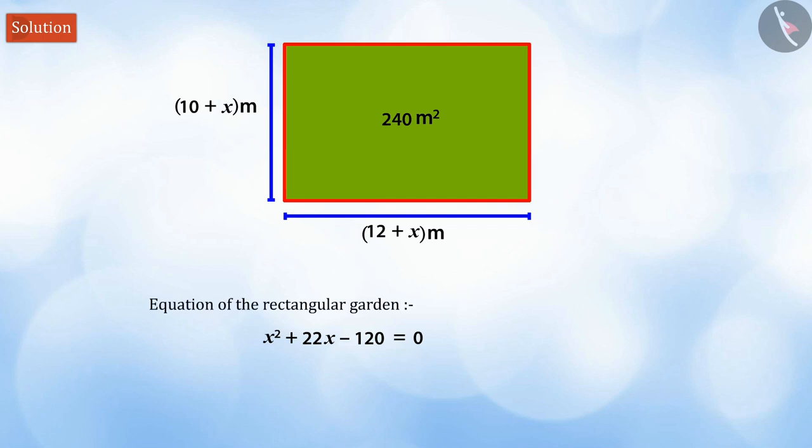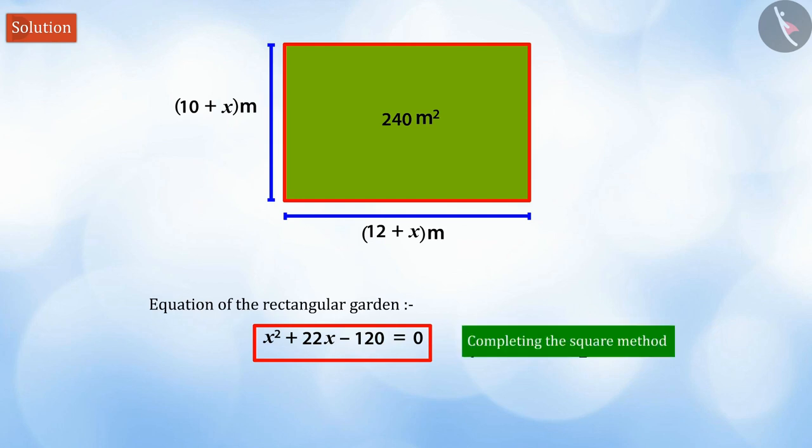Do you remember how we had solved a similar equation in the previous video? Well done! We can solve this by completing the square method. First and foremost, we see that the equation is not in the form of perfect square. To simplify it, let us move its constant to the right side.